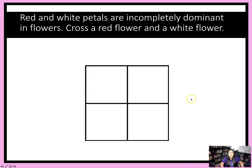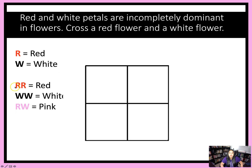So let's look at this example. If red and white petals are incompletely dominant in flowers, cross a red flower and a white flower. First, you're going to establish your dominant letters — capital R for red and capital W for white. Now let's define our genotypes and phenotypes. If we have two capital R's, it's red. If we have two capital W's, it's white. And if we have R and W, we make a third phenotype, which is pink — that's incomplete dominance.